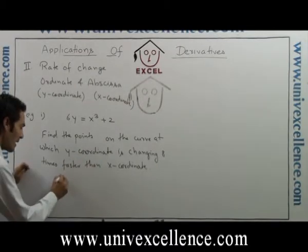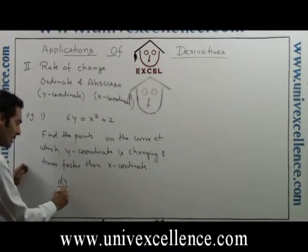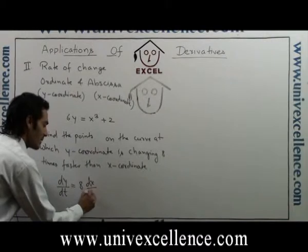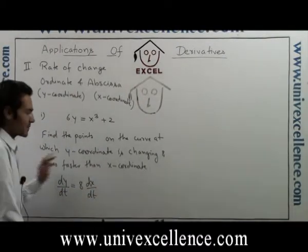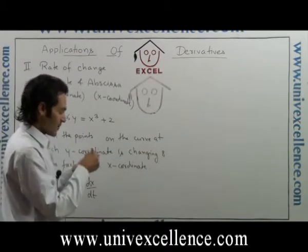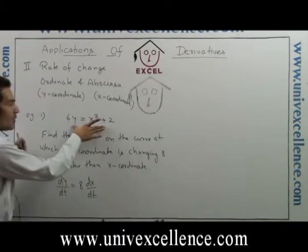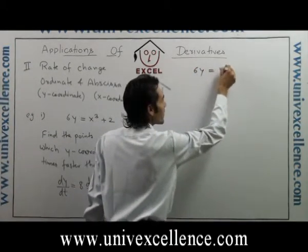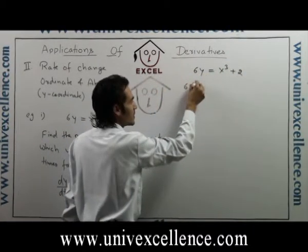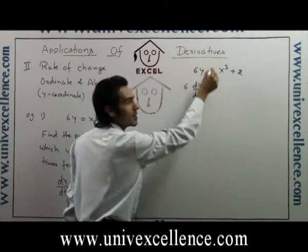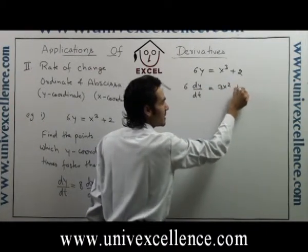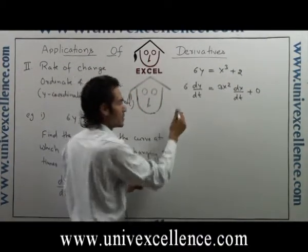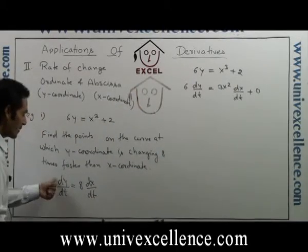The equation of the curve is 6y = x³ + 2, and the given condition is that the rate of change of the y-coordinate, dy/dt, is 8 times faster, meaning dy/dt = 8·dx/dt. Differentiating the curve on both sides with respect to time: 6·dy/dt = 3x²·dx/dt + 0, since 2 is a constant.